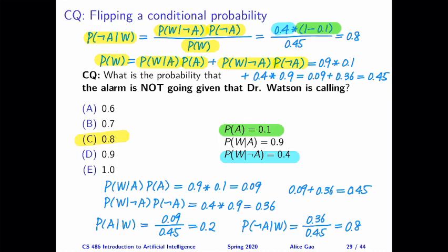And given this expression, we have pretty much all of the information we need. So plugging the numbers, we get 0.45. And then taking this and plugging it into the formula above, we get a final answer, which is 0.8.